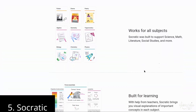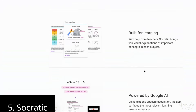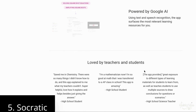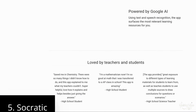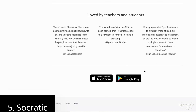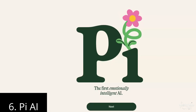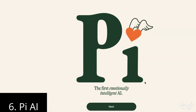Fifth on this list is Socratic AI. Imagine you have doubts about a topic in school or college — you can simply ask Socratic AI. It doesn't just give you the answer but also provides examples and detailed explanations to help you understand better. Socratic AI makes education more interactive and engaging, turning learning into an enjoyable experience.